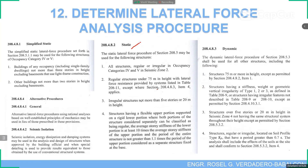The simplified static method is a more simplified computation of the static procedure. It is used for structures of occupancy category 4 or 5 — buildings of any occupancy not more than 3 stories in height, excluding basements, that use light frame construction, which does not include reinforced concrete. Number 2: other buildings not more than 2 stories in height, excluding basements.